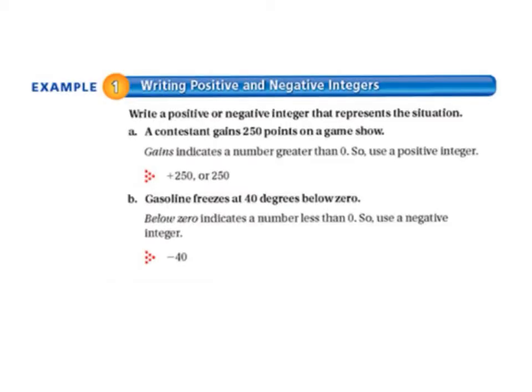Today we'll be starting on page 250 in your Math Textbook. Let's start with Example 1, Writing Positive and Negative Integers. Our first direction is to write a positive or negative integer that represents the situation. Letter A, a contestant gains 250 points on a game show. The word gains indicates a number greater than 0, so we would use a positive integer, plus 250 or 250.